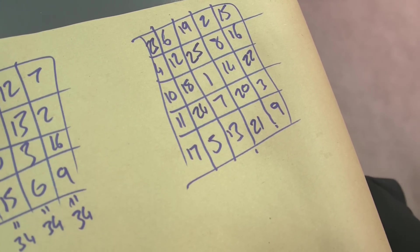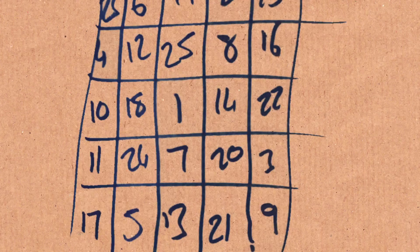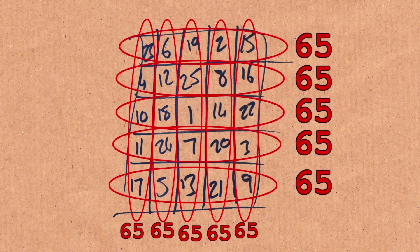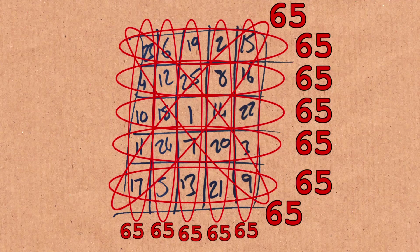Let's do a 5 by 5. And again, I think the magic number is 65 for this one. So all the columns and rows should add up to 65.